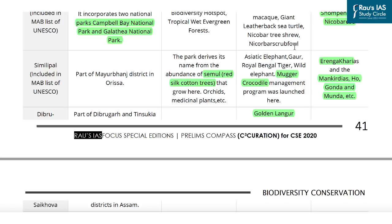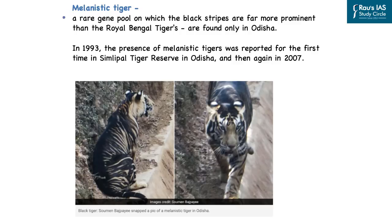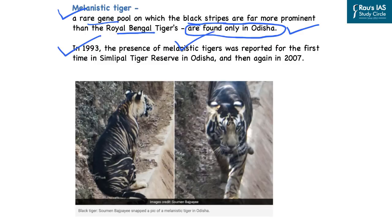From the prelims compass, it is important to go through all biosphere reserves in India recognized under the UNESCO MAB programme. Last year, a new type of tiger was reported from the Simlipal Tiger Reserve—the melanistic tiger. It is a rare gene pool in which black stripes are far more prominent than on Royal Bengal tigers and is found only in Odisha. The presence of melanistic tigers was first reported in Simlipal Tiger Reserve in 1993, again in 2007, and then in 2020 they were reported in Nandankanan Wildlife Sanctuary in Odisha.